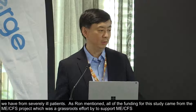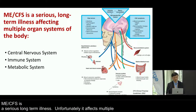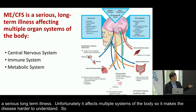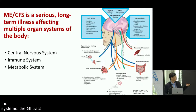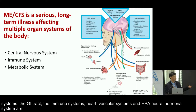ME-CFS is a serious long-term illness affecting, unfortunately, multiple organ systems of the body, which makes the disease harder to understand. As we can see in the diagram, clockwise you get the muscle systems, the GI tract, the immune systems, the heart vascular systems, and the HPA neurohormonal system that are all potentially affected by the disease, leading to problems in the central nervous system.